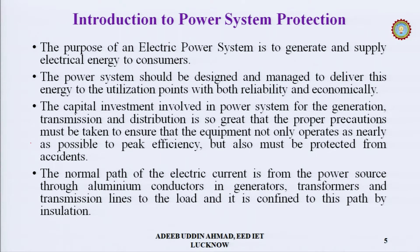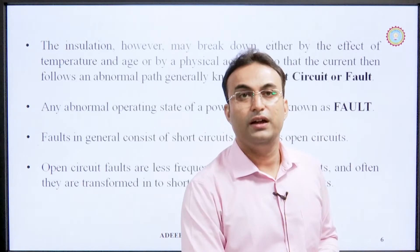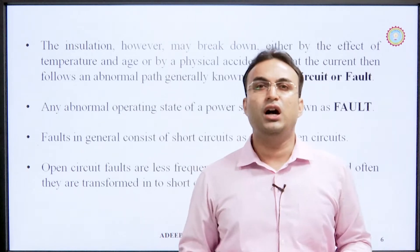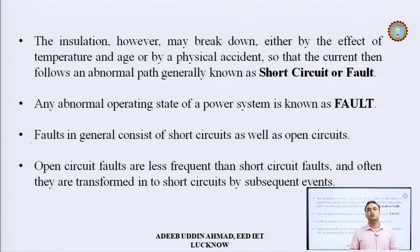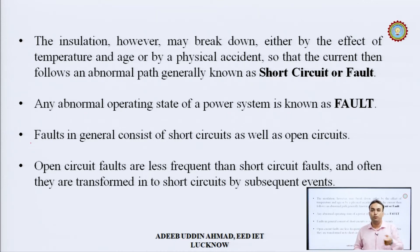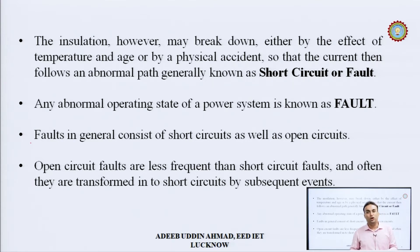If we talk about faults, the normal path of electric current is from the power source through conductors — generators, transformers, transmission lines — to the connected load. However, insulation may break due to temperature effects, aging, or physical accidents, causing current to follow an abnormal path. This phenomenon is known as a short circuit or fault.